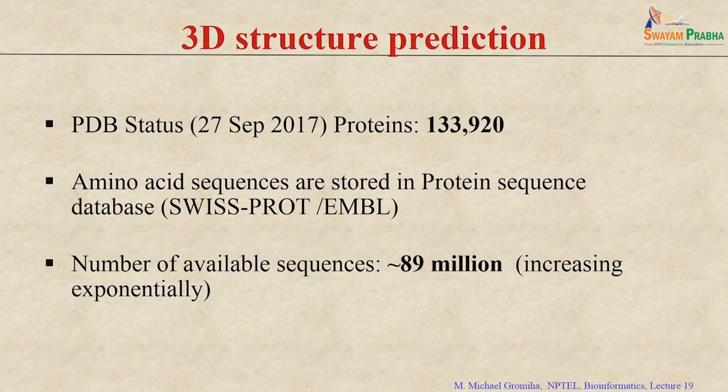We also discussed applications of contact maps for superimposing protein structures — if there are two different structures, you can see how similar they are in 3D. Currently, we have around 133,000 structures in the Protein Data Bank.